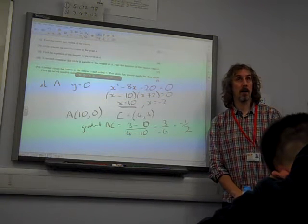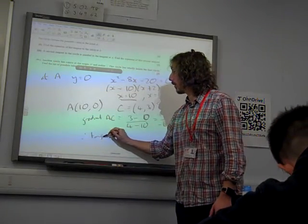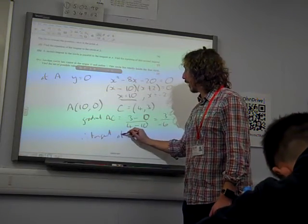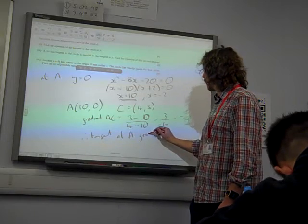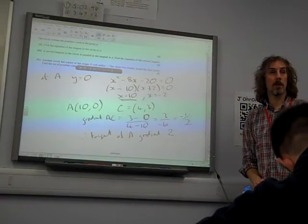That's the gradient of my radius. So the tangent at A has a gradient of 2, the negative reciprocal of my radius gradient.